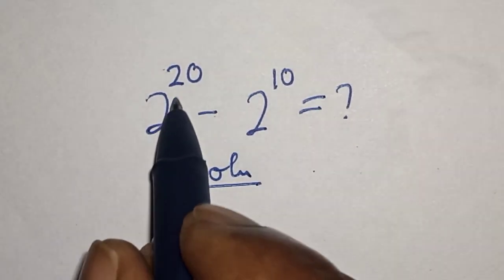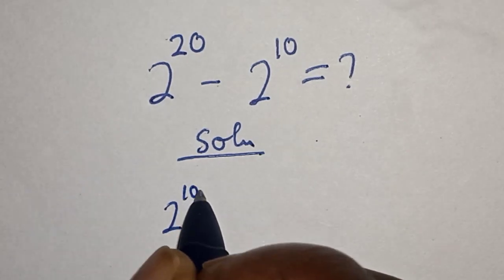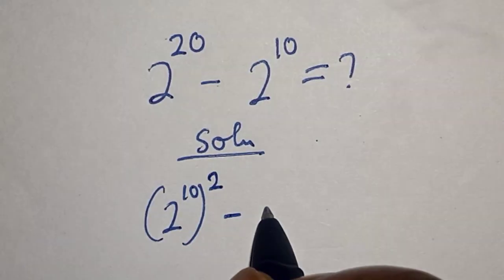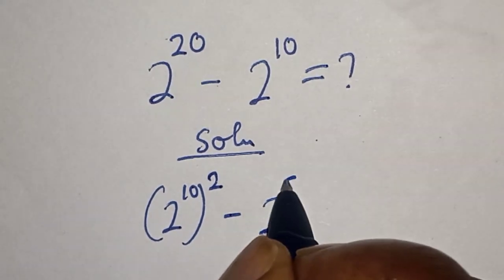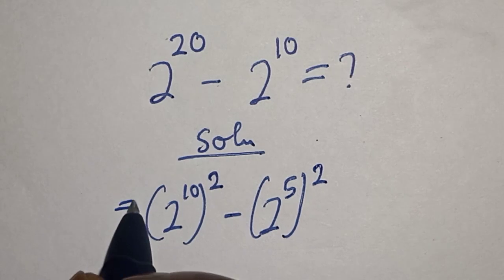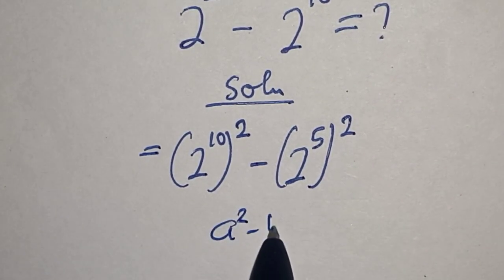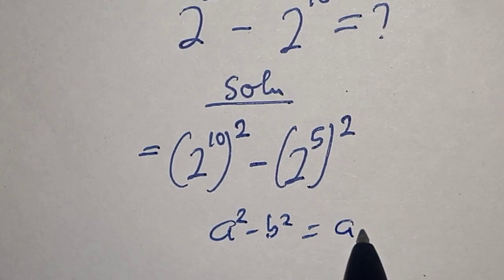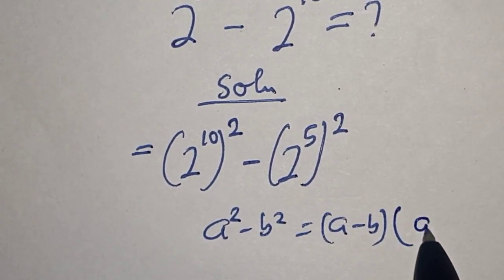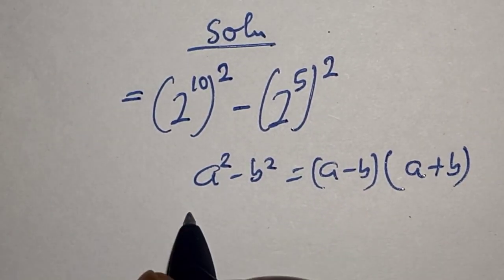2 raised to power 20 can be written as 2 raised to power 10, all raised to power 2. Then 2 raised to power 10 equals 2 raised to power 5, all raised to power 2. This is a difference of two squares: a squared minus b squared equals (a minus b) multiplied by (a plus b).